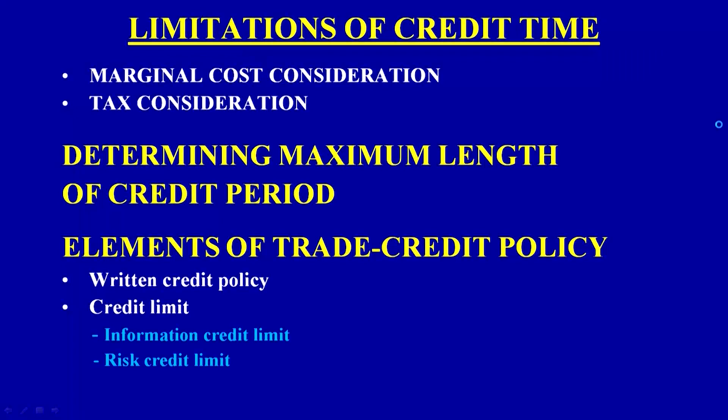We have seen the limitations of the credit period from both the buyer's and the seller's perspective, and we have learned how to determine the maximum length of the credit period using the model. The next important thing we will learn about is the elements of the trade credit policy. There are two important elements: one is the return credit policy, and the other is the credit limits.